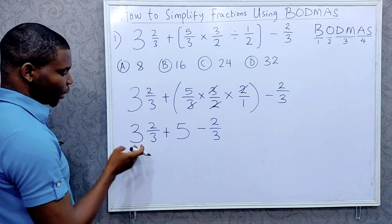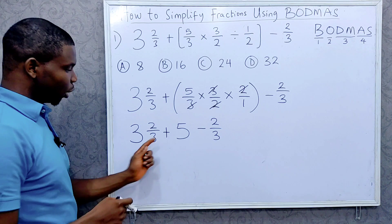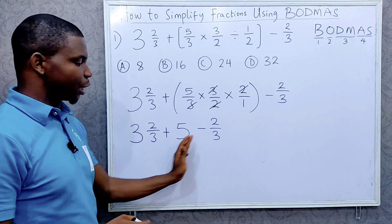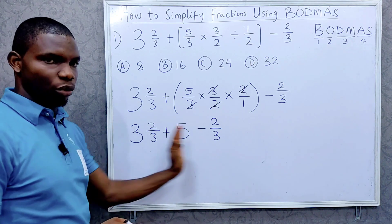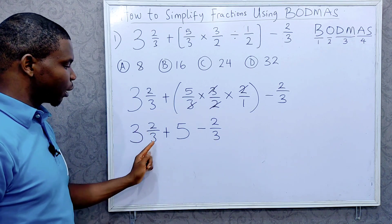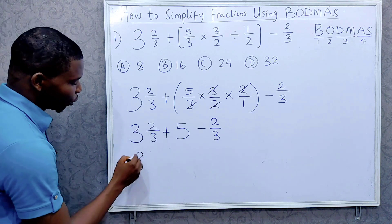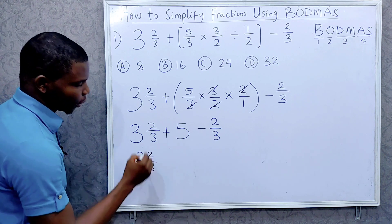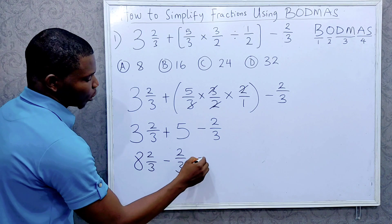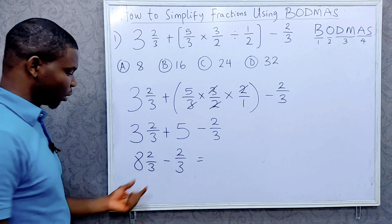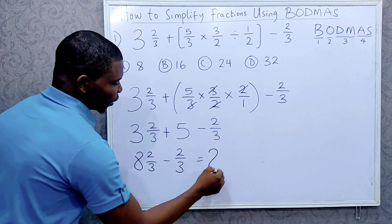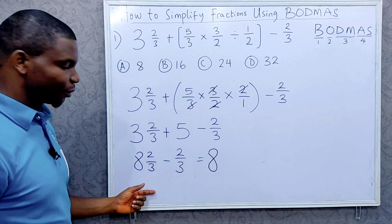What is 3 whole number 2 over 3 plus 5? Just adding the addition part: 3 and 2 over 3 plus 5 is 8 and 2 over 3, then minus 2 over 3. You just subtract the fraction part, and so we have 8 as our answer.